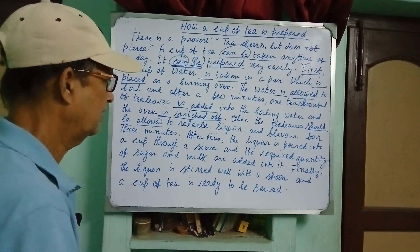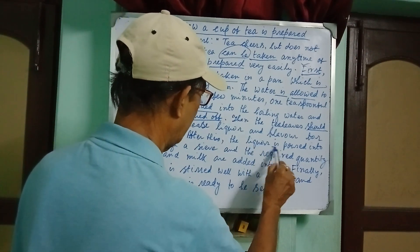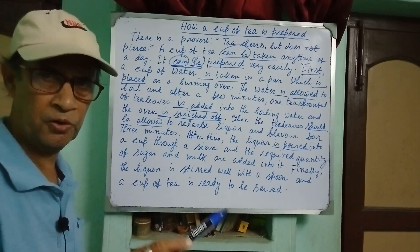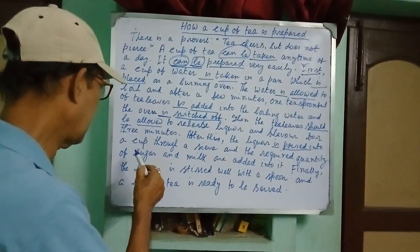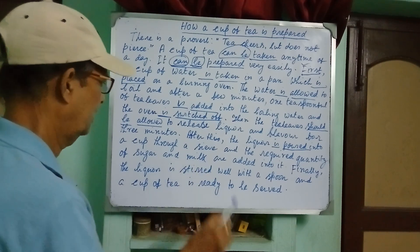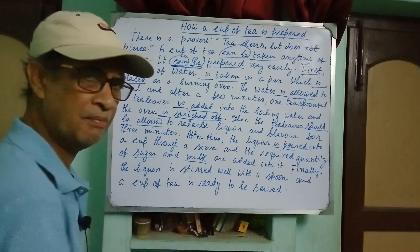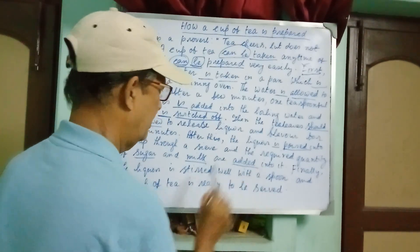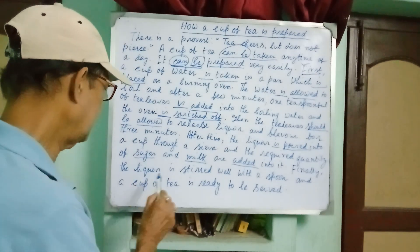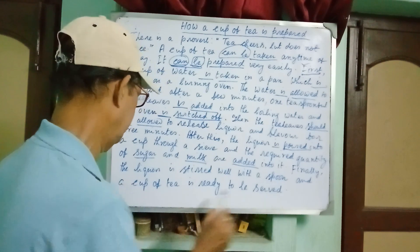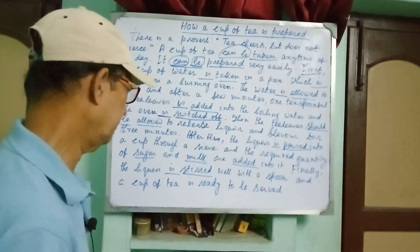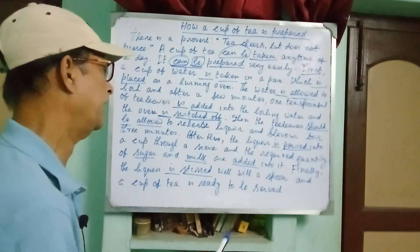After this, the liquor is poured — 'liquor' is third person singular, so we use 'is,' and 'poured' is the past participle — into a cup through a sieve. And the required quantity of sugar and milk are added into it — 'sugar and milk' are plural, so we use 'are.' Finally, the liquor is stirred well with a spoon, and a cup of tea is ready to be served, which is the infinitive form in passive voice.